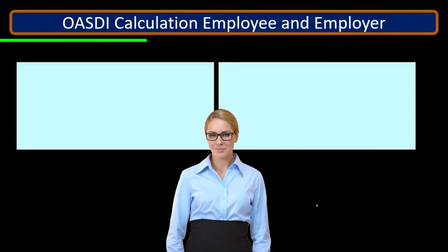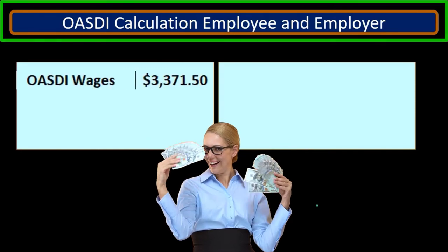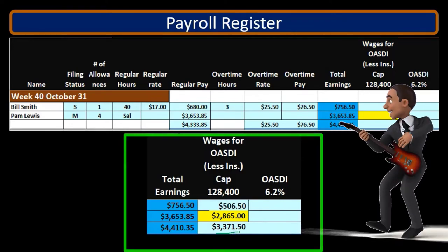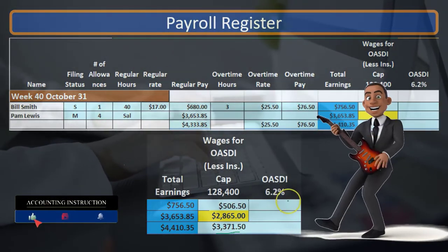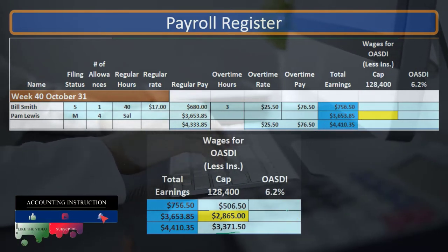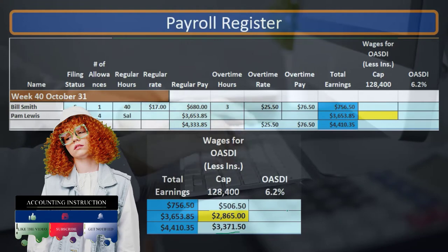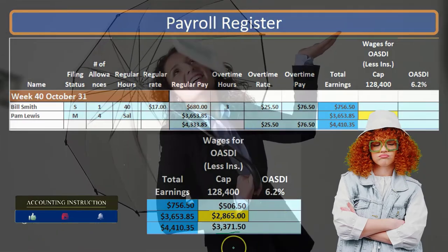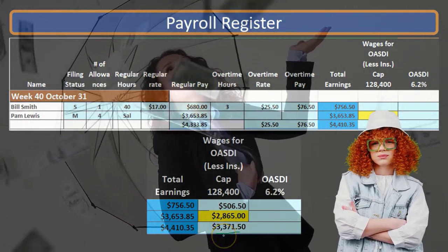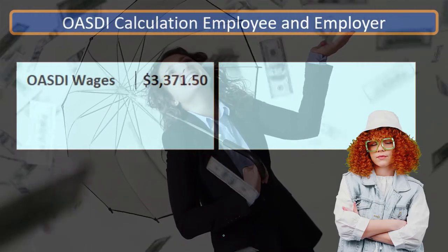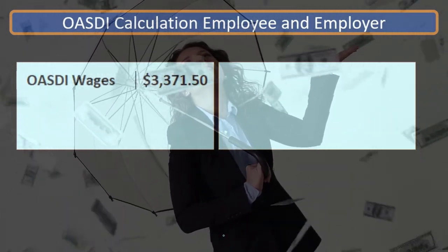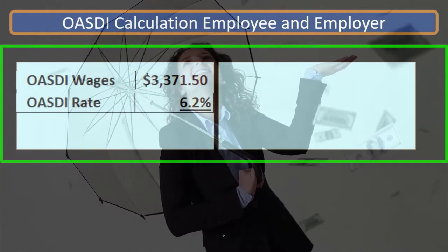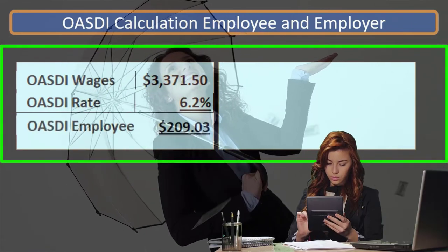Then if we do the calculation for Social Security, it'll look something like this. We're going to start off with the total so we can see the fact that we could use the total and calculate based on this, and then we'll go back and calculate for each individual. That'll give us an idea of how this flat tax works, as opposed to a progressive tax like the federal income tax or FIT tax. So we're first going to calculate Social Security based on the $3,371.50 total wages for all employees, multiplied by 6.2%, or 0.062, which gives us $209.03.